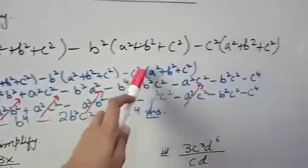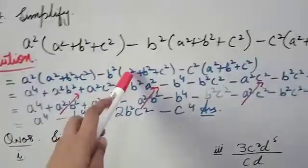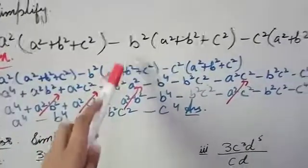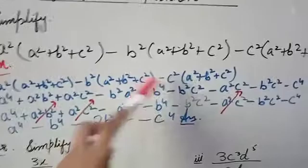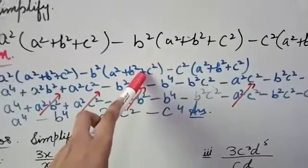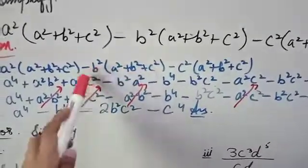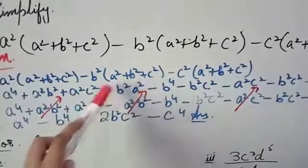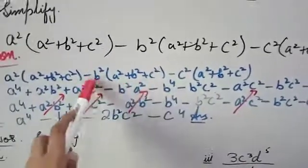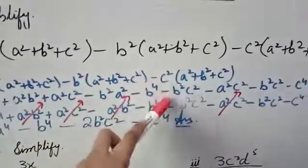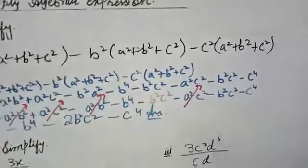Similarly, multiply b² with each term. Note there is a minus sign in between — so minus plus gives minus. b² × b² = b⁴, and b² × c² = b²c², also with a minus sign.